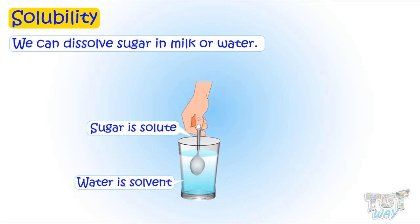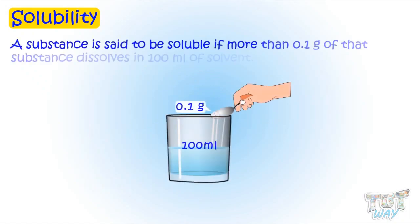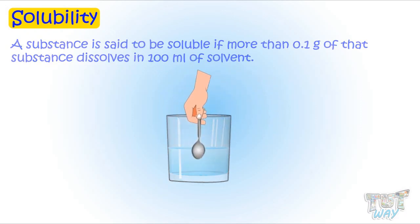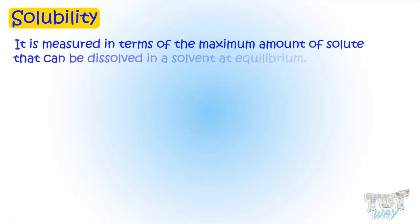Now let's learn more about solubility. Solubility is a quantitative term. A substance is said to be soluble if more than 0.1 g of that substance dissolves in 100 ml of solvent. Solubility is measured in terms of the maximum amount of solute that can be dissolved in a solvent at equilibrium.